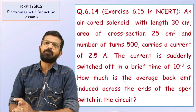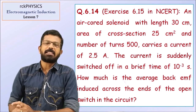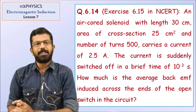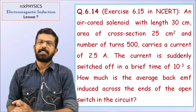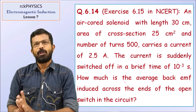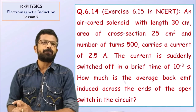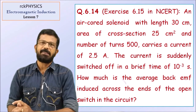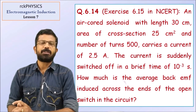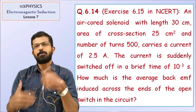Exercise number 6.15. An air-cored solenoid with a length of 30 cm, area of cross-section 25 cm², and number of turns 500, carries a current of 2.5 ampere. The current is suddenly switched off in a brief time of 10 raised to minus 3 second. How much is the average back EMF induced across the ends of the open switch in the circuit?